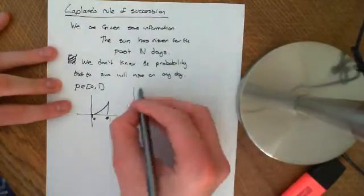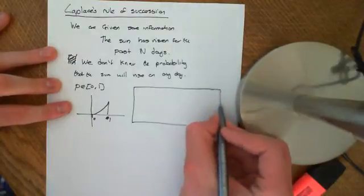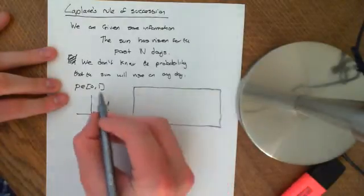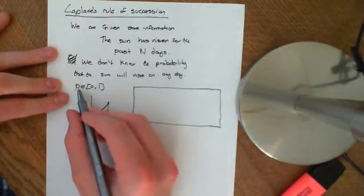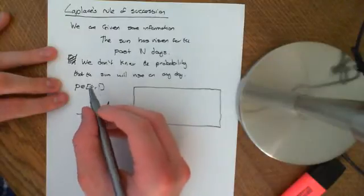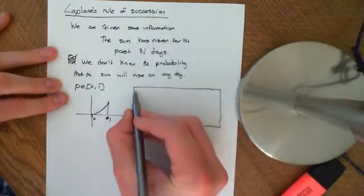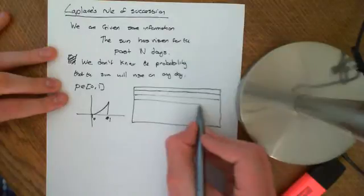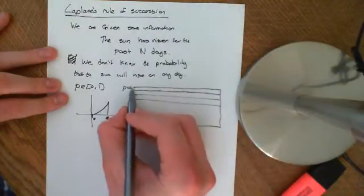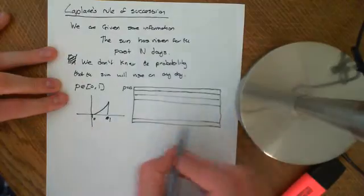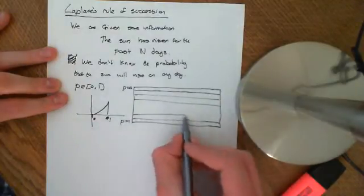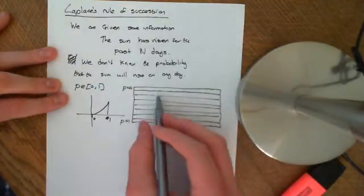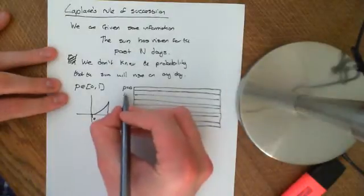If we think about our great big probability space — all the possibilities that could happen — the first thing is that we don't know what the probability that the sun will rise on any specific day is yet. We can split this probability space up into every possible value that P can take. These are events that are going to split up the sample space into a partition — all the different values of P.